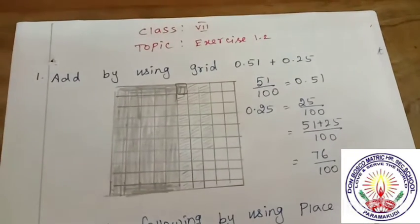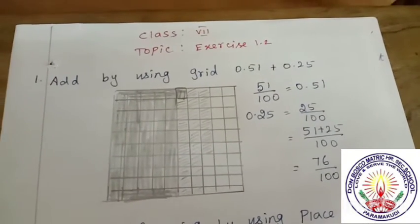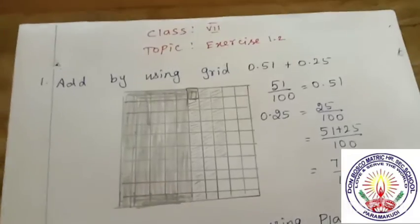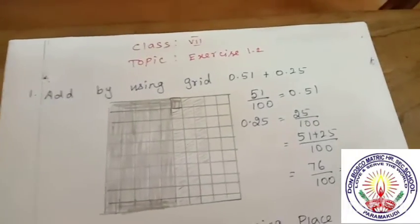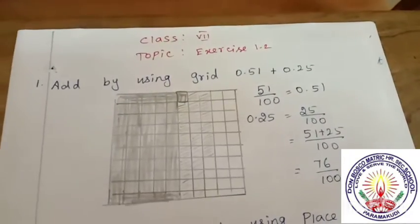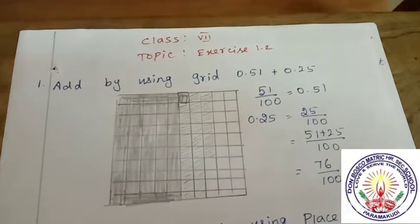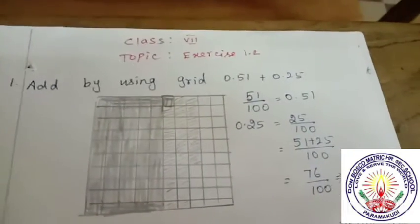Good morning students, today we have learnt exercise 1.2. Add by using grid 0.51 plus 0.25.